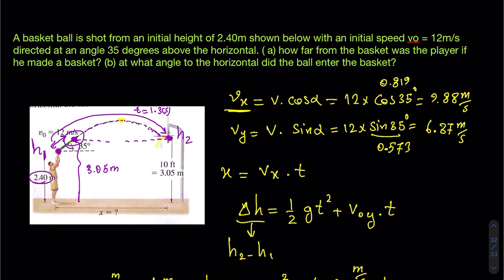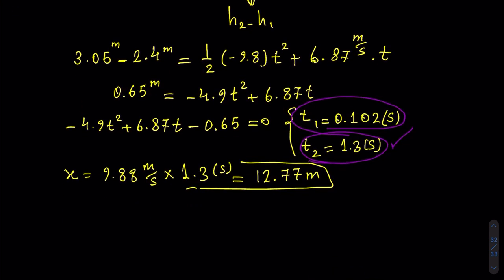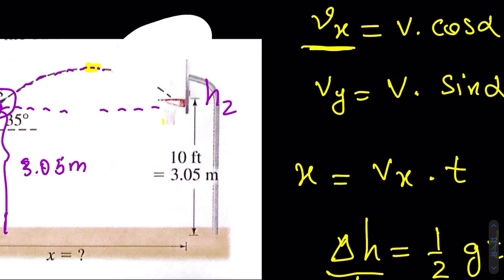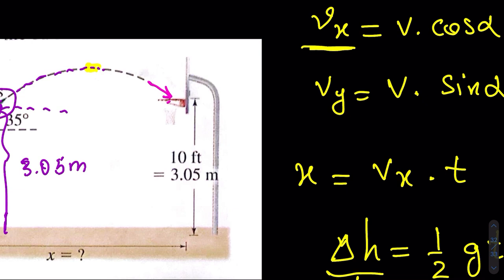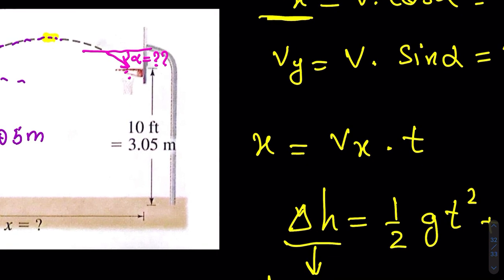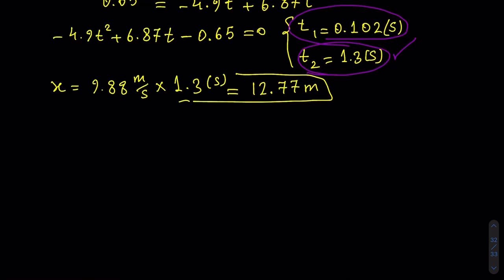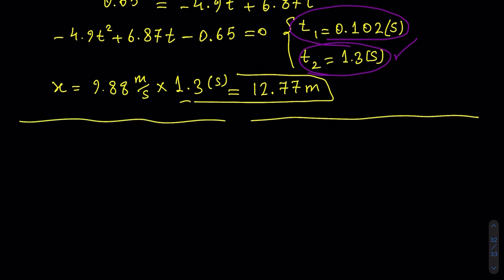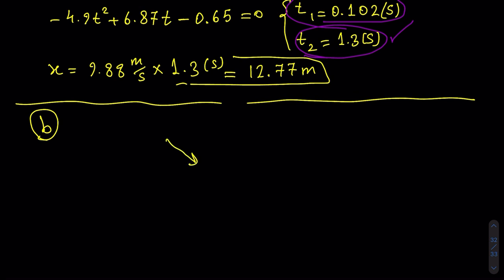Part B asks: at what angle to the horizontal did the ball enter the basket? We need to find this entry angle measured with respect to the horizontal. To find the angle, we need the components of velocity at the final point. V sub x remains 9.88 m/s, and we need to find V sub y final — the vertical velocity component at the moment the ball enters the basket.